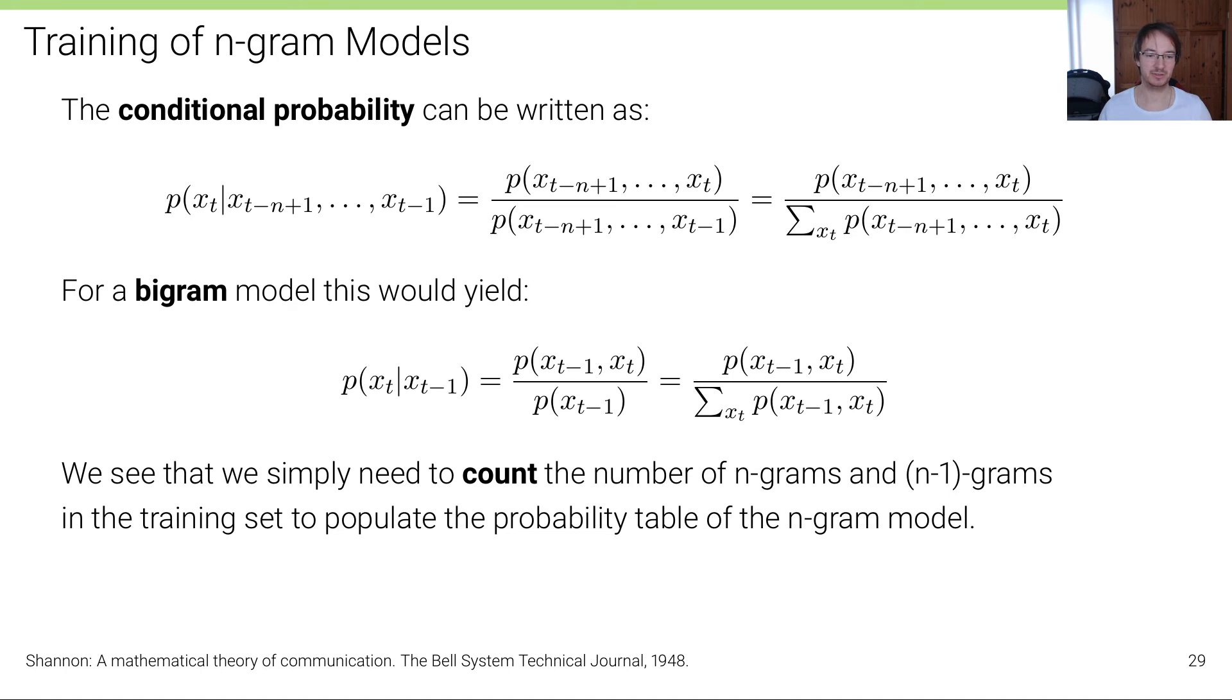We see that we simply need to count the number of n-grams and (n-1)-grams in the whole training corpus to populate the probability table of the n-gram model. It's just counting - how often is xT-1 followed by xT, divided by the number of occurrences of xT-1. It's very simple - training amounts to counting. The most simple training process - no gradient descent, just counting.